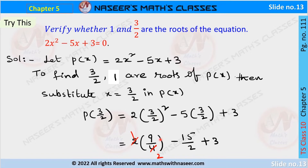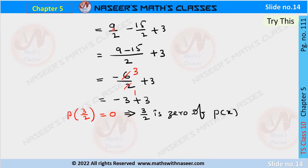Here, (3/2) whole square equals 9, and 2 squared equals 4. And 5 into 3 is 15. We can cancel: 2 into 9/4 simplifies — 2 cancels with 4 to give 9/2. So after that, we can write this as 9/2 minus 15/2 plus 3.